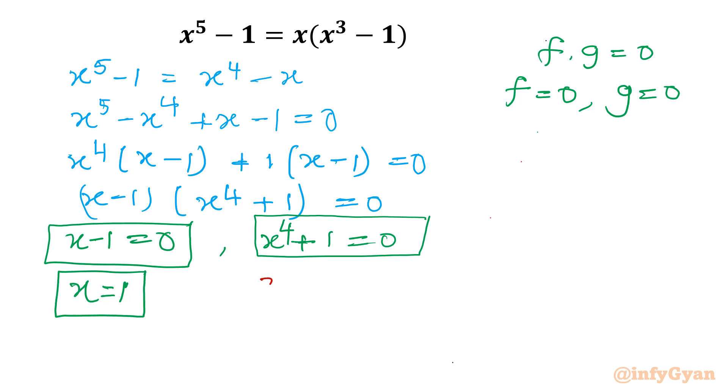So I will write x^4 + 1 = 0. I will add 2x^2 and I will subtract also because I am adding. Now I can consider x^4 + 2x^2 + 1 in one bracket and -2x^2 in other bracket.